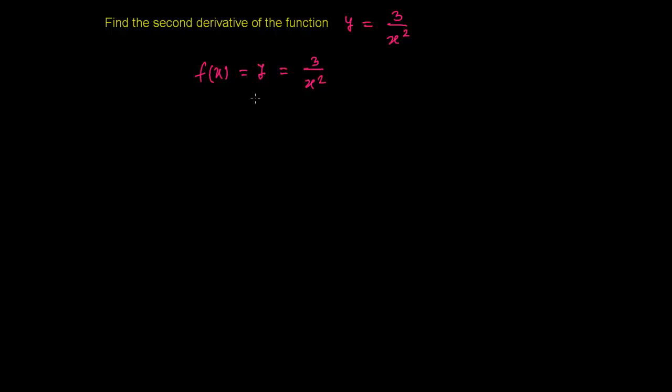So 3 over x square is your given function and now you need to find out the second derivative of this. We have already discussed in previous videos what is second derivative and how to find it out. To find the second derivative, we need to first find the derivative of this function which is also known as the first derivative of the function, which represents f prime of x or if you are using y notation then you write dy over dx.